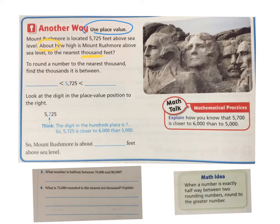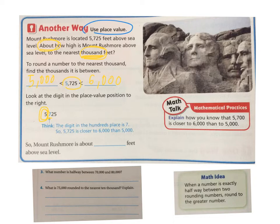Here it's telling us we're rounding to the thousands place. To round a number to the nearest thousand, we have to find the two thousands that our exact number is between. Our exact number is 5,725, so the lower end would be 5,000 and the upper end would be 6,000. Now whenever we round using place value, I want you to circle the place that we're trying to round to. Because it's telling us to round to the thousands place, we're going to circle the thousands place and underline the place value position to the right, which in this case is 7.